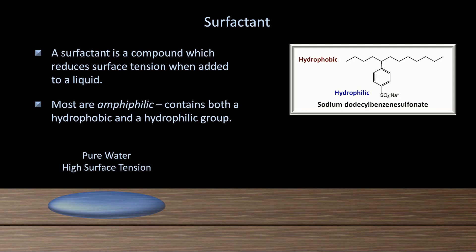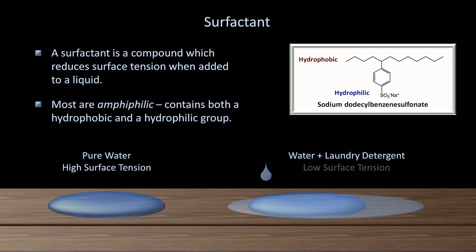What effect does adding surfactant have to water? We saw earlier that water has a tendency to form puddles due to its intrinsic surface tension — these puddles are relatively thick depending on the surface. If we take an identical puddle of water and add some laundry detergent, the surfactants within decrease the surface tension, the effect of which will be to spread the puddle out further.